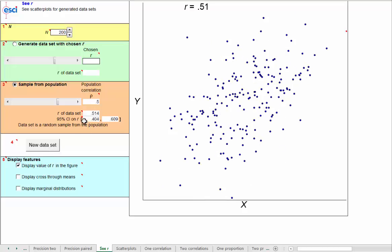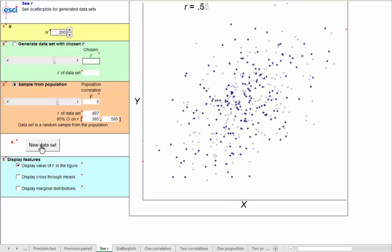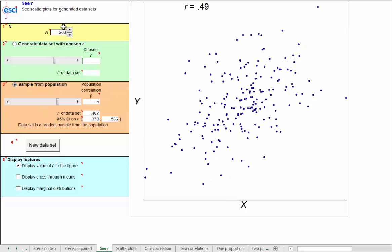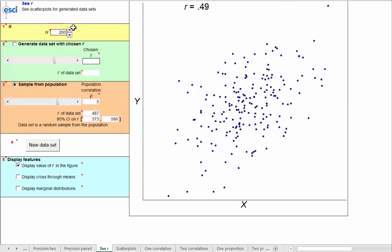And correspondingly, of course, we expect our 95% confidence intervals to be shorter when we have larger samples. And you can experiment with a much smaller n as well. And you'll see that these r values bounce around very wildly if samples are quite small. And correspondingly, all the confidence intervals are really quite long.